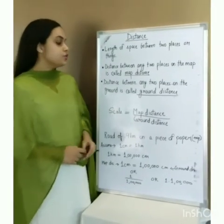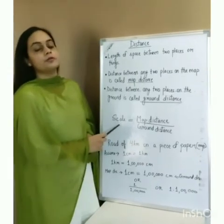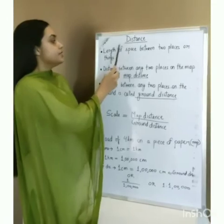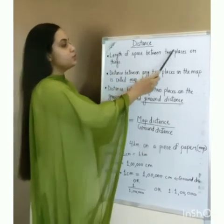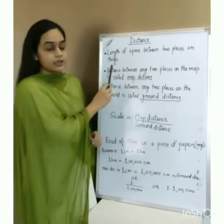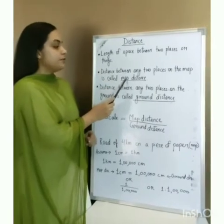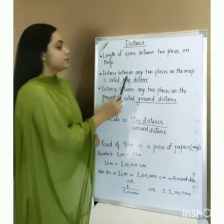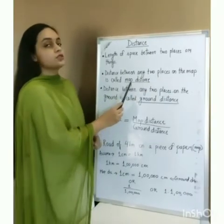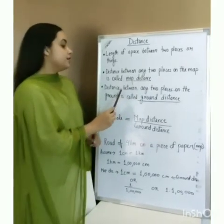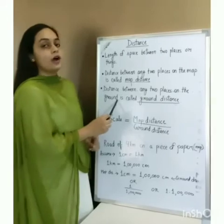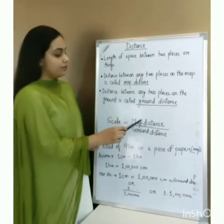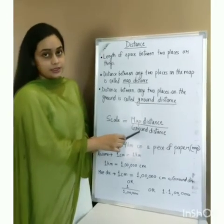Now we will learn about scale. But before we start, you should know what distance is. Distance is the length of space between two places or things. Distance is of two types: map distance and ground distance. The distance between any two places on the map is called map distance, and the distance between any two places on the ground is called ground distance. Scale is the ratio of map distance to ground distance.